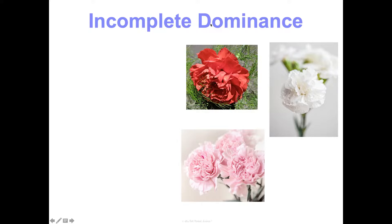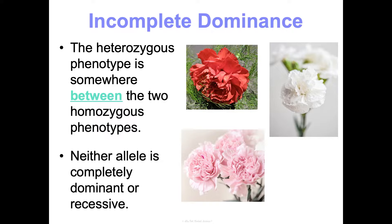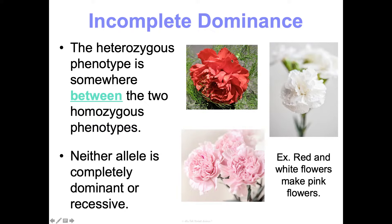The first exception is incomplete dominance. When you think incomplete, think intermediate. This is where the heterozygous genotype results in a phenotype somewhere between the two homozygous phenotypes, so neither allele is truly dominant or recessive. For example, if one allele codes for red color and one for white, the heterozygous individual will produce pink — as opposed to complete dominance, where red and white would make all red if red is dominant.